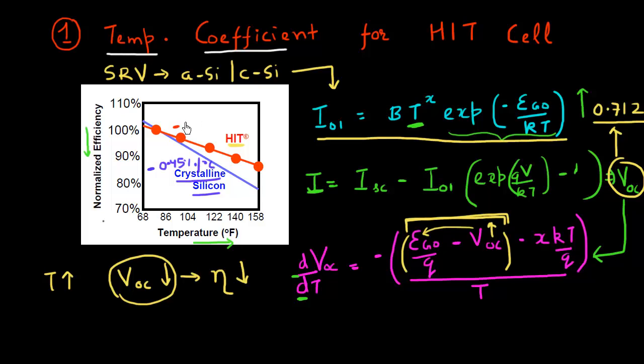In comparison, the HIT cell has roughly a temperature dependence of half of that. For a HIT cell, the temperature dependence of efficiency is only 0.23% decrease per degree increase in temperature. If I increase the temperature by 10 degrees centigrade, my efficiency only decreases by 2.3%. So that makes these HIT cells very favorable for operation in high temperature conditions in deserts or places where you're operating these cells at high temperature. They'll have much better efficiencies as compared to crystalline silicon cells.